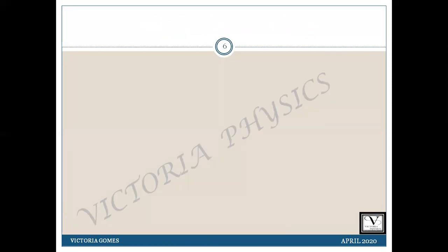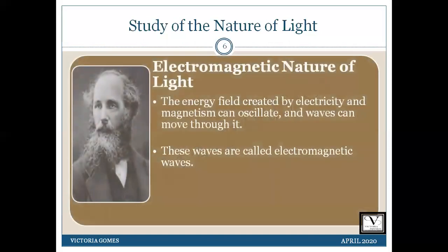The next very important theory is the electromagnetic nature of light. James Clerk Maxwell suggested that light propagates as a traveling wave of electric and magnetic fields. Such waves are called electromagnetic waves. These waves are transverse in nature and require no medium for their propagation.